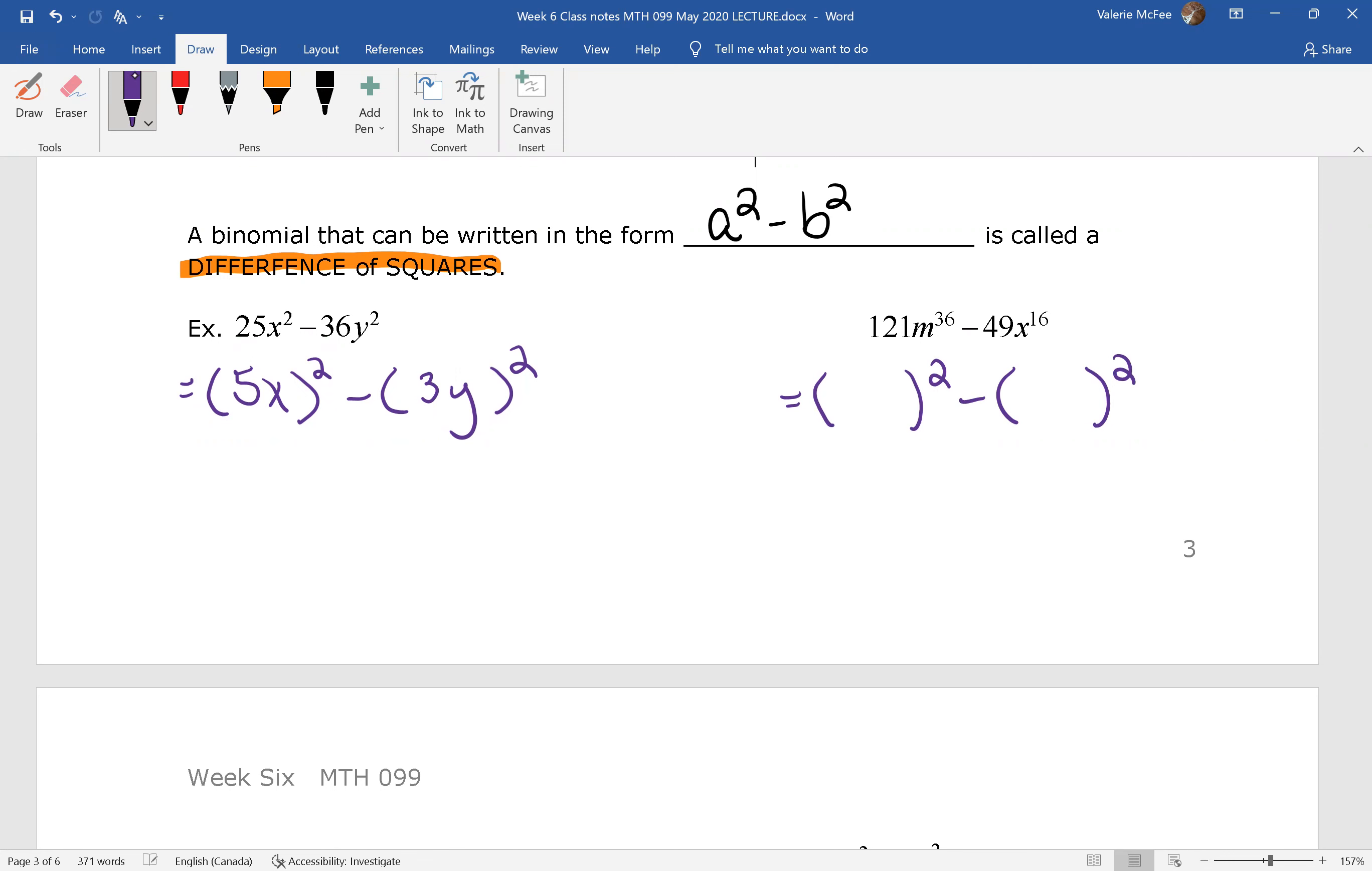So 121, well, the square root is 11, so we have 11 squared, but what about m to the power of 36? Remember, when you're raising a power to a power, you're multiplying exponents, so we need an 18 there. And for x, it's going to be an 8, multiplying powers when you raise a power to a power.